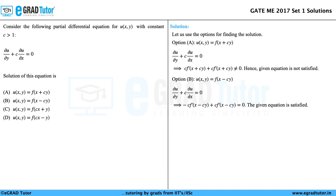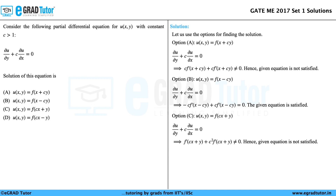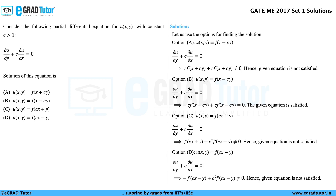Let us also check Options C and D similarly. Option C says u(x, y) = f(cx + y), and that does not satisfy the given equation. Option D says u(x, y) = f(cx - y), and substituting in the given equation, it is again not satisfied.